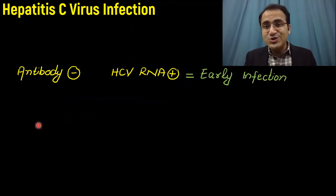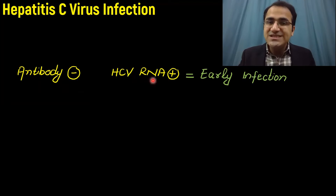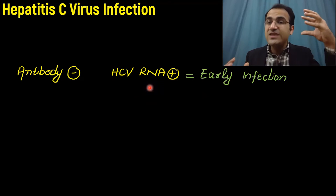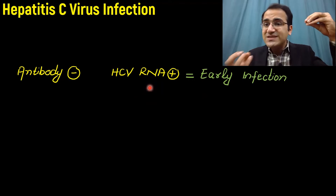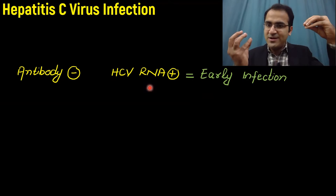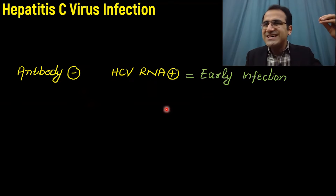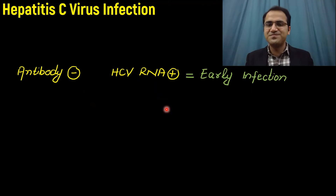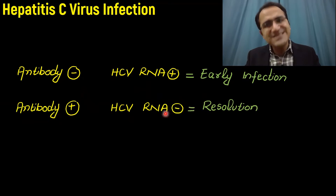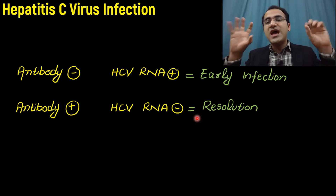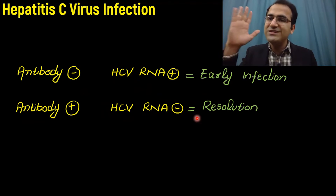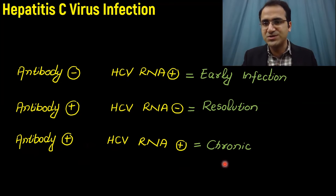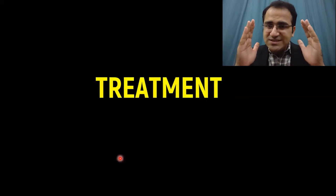A simple way to remember HCV serology: if antibodies are negative and HCV RNA is positive, it is an early infection — the virus entered less than eight weeks ago and the immune system has not yet produced detectable antibodies. If antibodies are positive and HCV RNA is negative, it is a previous resolved infection — antibodies have cleared the virus. If antibodies are positive and HCV RNA is positive, the patient is most likely heading toward a chronic course.